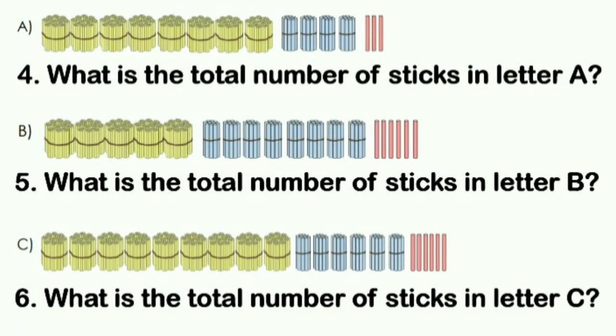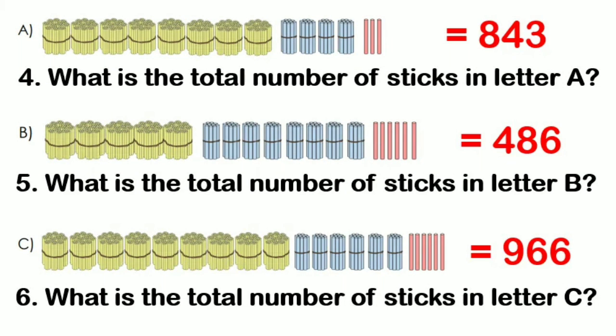Now what is the total number of sticks in each letter? The answer for letter A is 843, while letter B is 486, and the total number of sticks in letter C is 966.